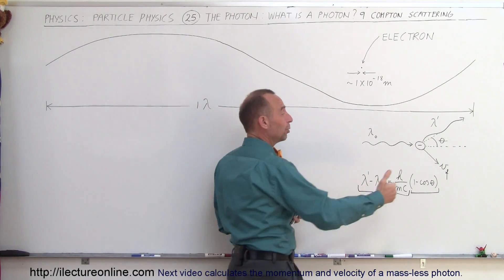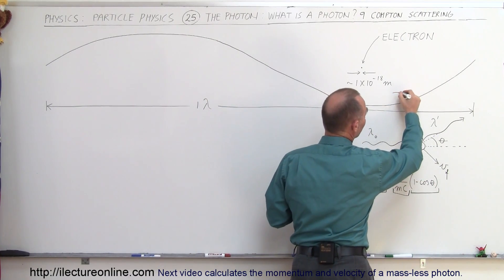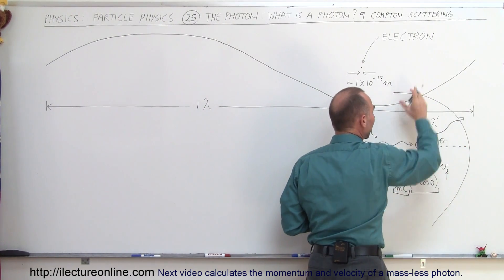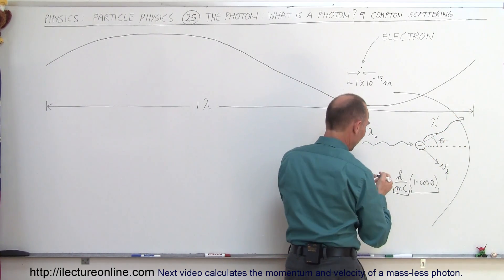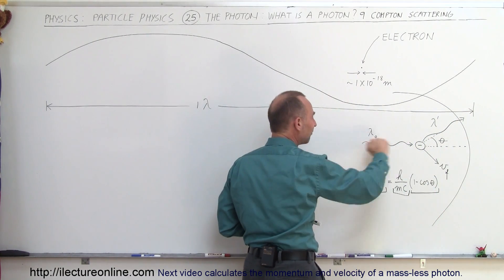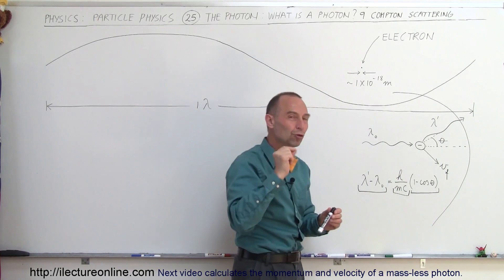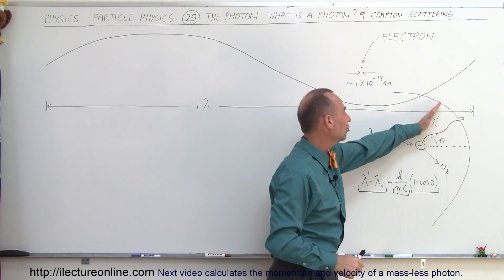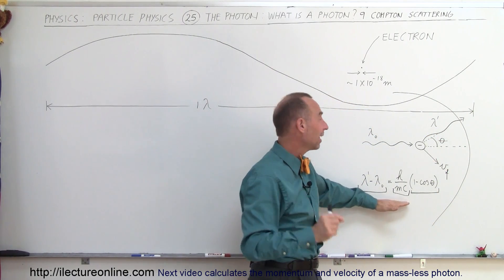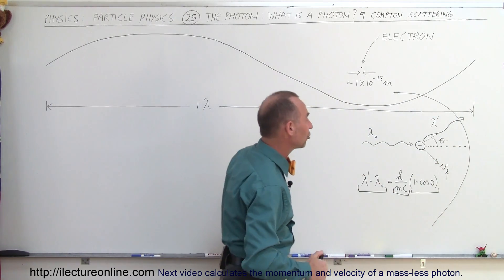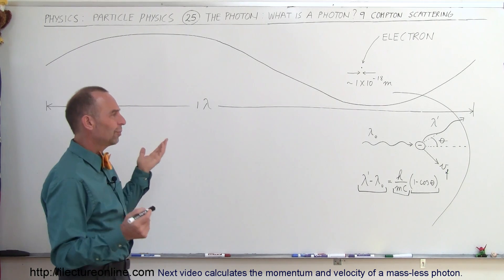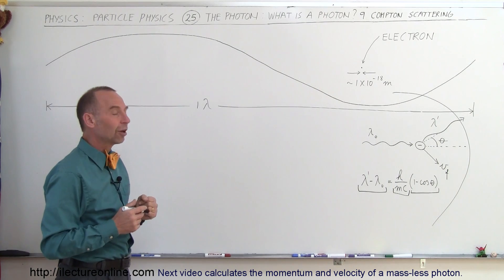We know this because detectors were placed around the scattering region, able to move to different angles, so we could measure the scattered photons at various angles and measure their wavelength or energy. We had incoming photons at a known wavelength and could measure the energy and therefore the wavelength of the scattered photon. We discovered that this equation fit the data measured from that experiment — and of course it was Compton who performed that experiment. It's really interesting that there's no dependency on the incoming photon's wavelength.